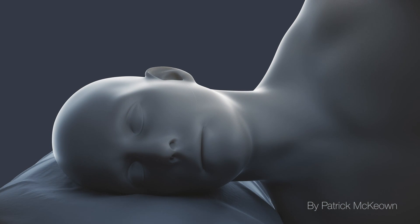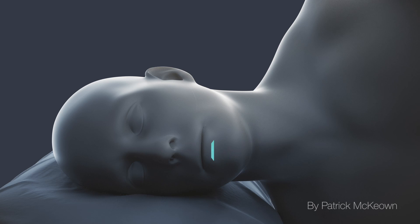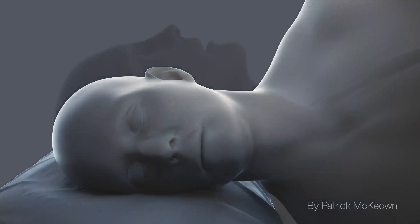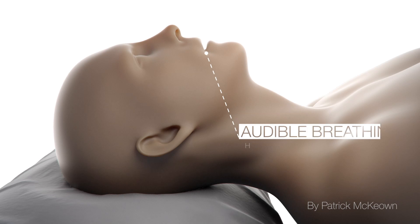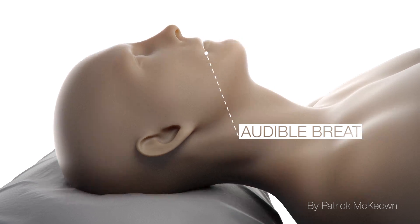To help open the upper airway, it is important not to sleep on the back and also to breathe through the nose. The second consideration in obstructive sleep apnea is the amount of air that we breathe. It is very common for people to habitually breathe too much air, as indicated by audible breathing, often through the mouth. Heavy breathing during sleep increases negative pressure in the upper airways, causing collapse.